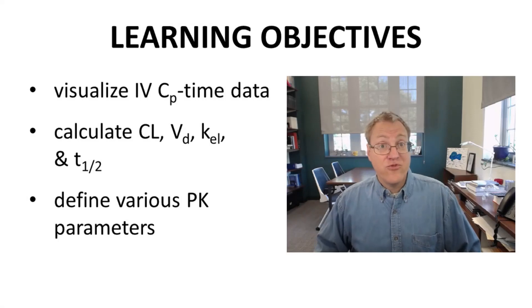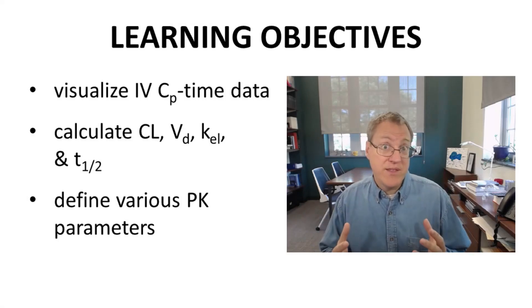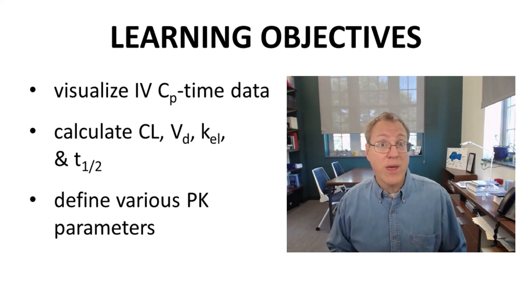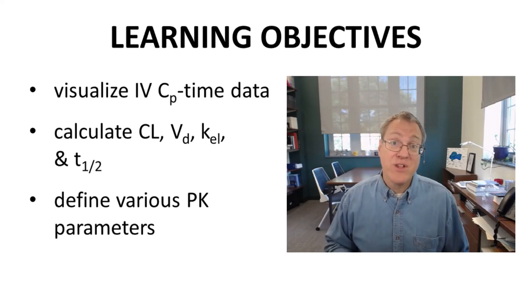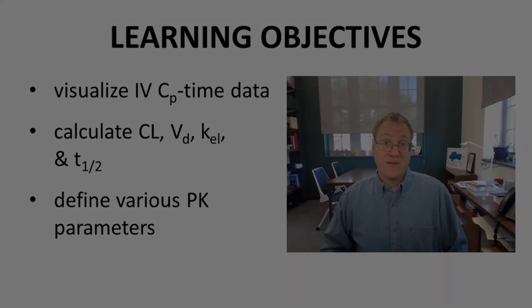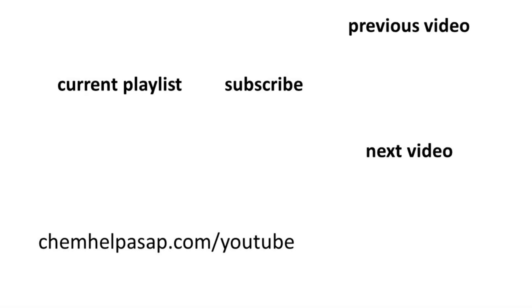We have now visualized CP time data in different ways and used CP time data to calculate various PK parameters while providing some definitions along the way. I hope you are more comfortable with using CP time data to estimate properties like half-life, clearance, and volume of distribution. Please like, leave a comment, or subscribe. Take care.